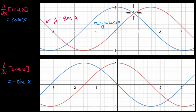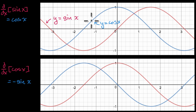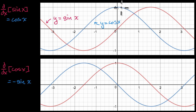Right over here we see sine of x in red and cosine of x in blue. We're assuming that this blue graph is showing the derivative — the slope of the tangent line for any x value — of the red graph. We've gotten an intuition for that in previous videos.